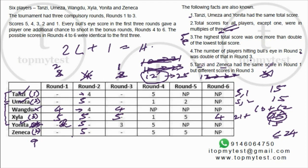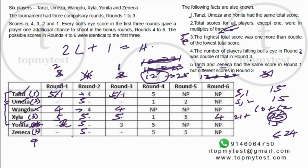The last additional fact: Tanzi and Zeneca had the same score in round one. Tanzi's possible round-one score is either 5 or 1. If both scored 1 in round one, then both would need bullseyes elsewhere — Zeneca would need his two bullseyes in rounds two and three, meaning he also scores 5 in round three, same as Tanzi — contradiction since they must have different round-three scores. So both Tanzi and Zeneca scored 5 in round one.